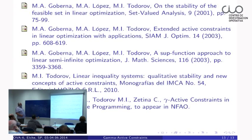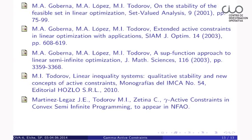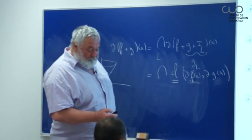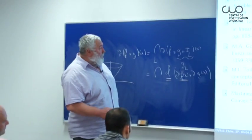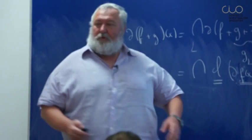These three papers are devoted to related questions in linear semi-infinite optimization. There is also a book, and the results for the convex case are presented in a paper on gamma-active constraints, which will appear in Numerical Functional Analysis and Optimization. Thank you very much.